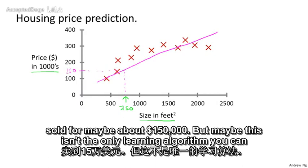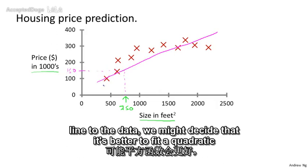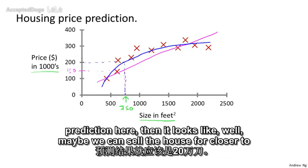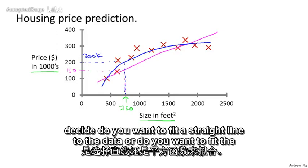But maybe this isn't the only learning algorithm you can use, and there might be a better one. For example, instead of fitting a straight line to the data, we might decide that it's better to fit a quadratic function, or a second-order polynomial, to this data. If you do that, then it looks like maybe they can sell the house for closer to two hundred thousand dollars. One of the things we'll talk about later is how to choose whether to fit a straight line or a quadratic function to the data.